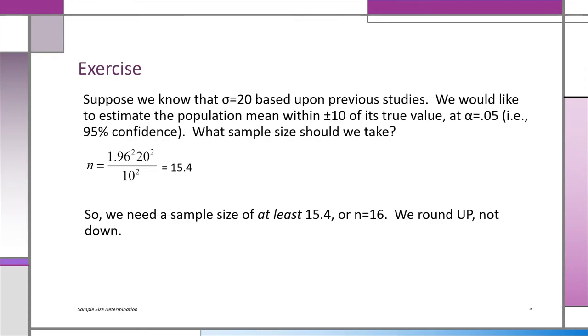So here's a simple problem. Suppose we know that sigma, that's the population standard deviation, we know that it's 20 based on previous studies. We want to estimate the population mean. That's the confidence interval that we're going to construct. We want to be within plus and minus 10 of its true value. In other words, we want the margin of error to be 10 on both sides. And we're going to use alpha of 0.05. That's a 95% confidence interval. What sample size should we take?